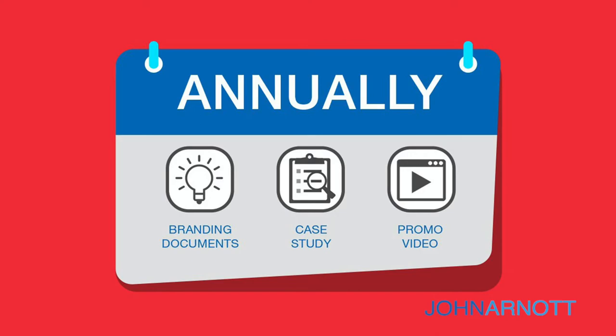Once a year, there are some things you have to do as well. We talked about reviewing your brand script every six months — annually, look at your overall brand. Not just your messaging, but your visual brand. Does your visual brand still seem fresh? Does it need some adjustments? If that's the case, you have to update your visual brand and update your branding guidelines documents with the changes you've made in the creative presentation of your brand.